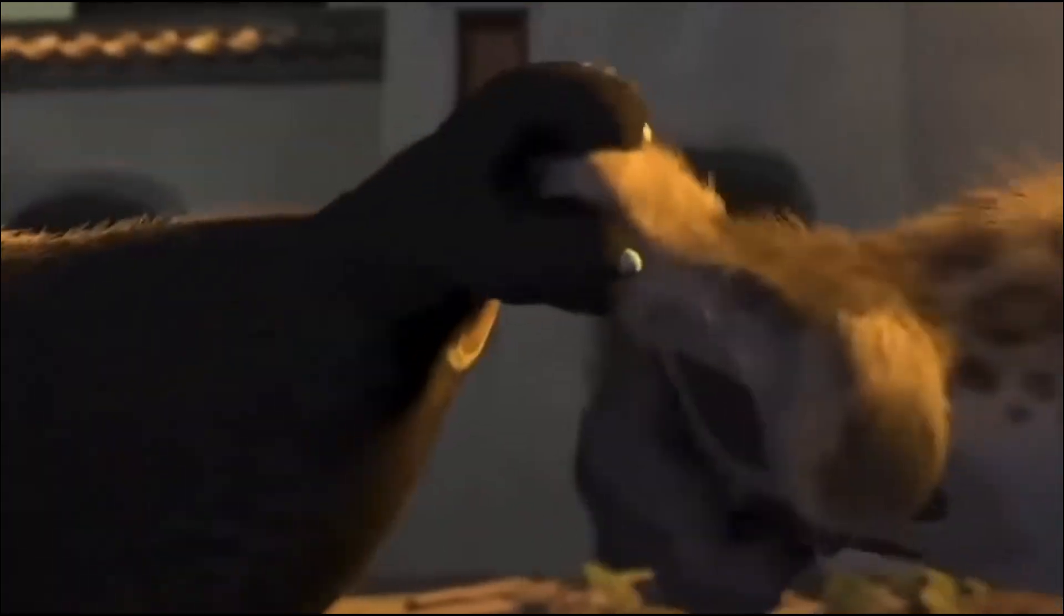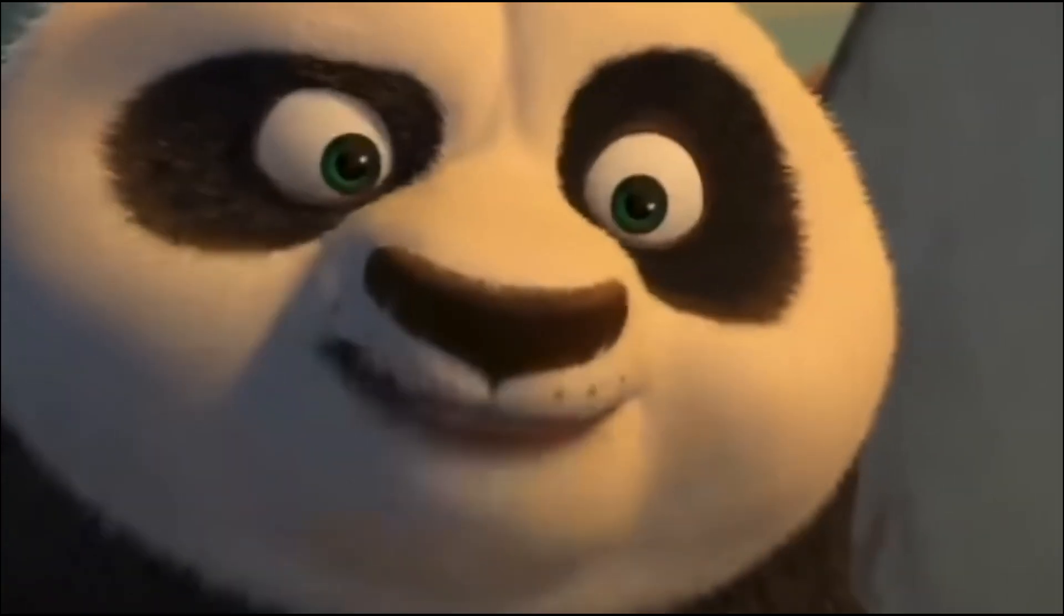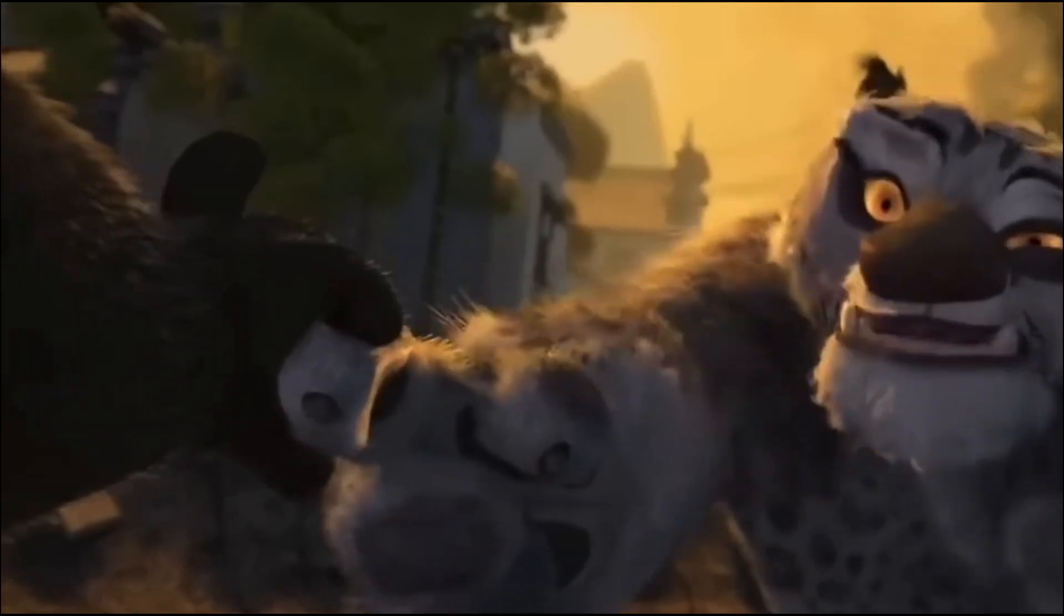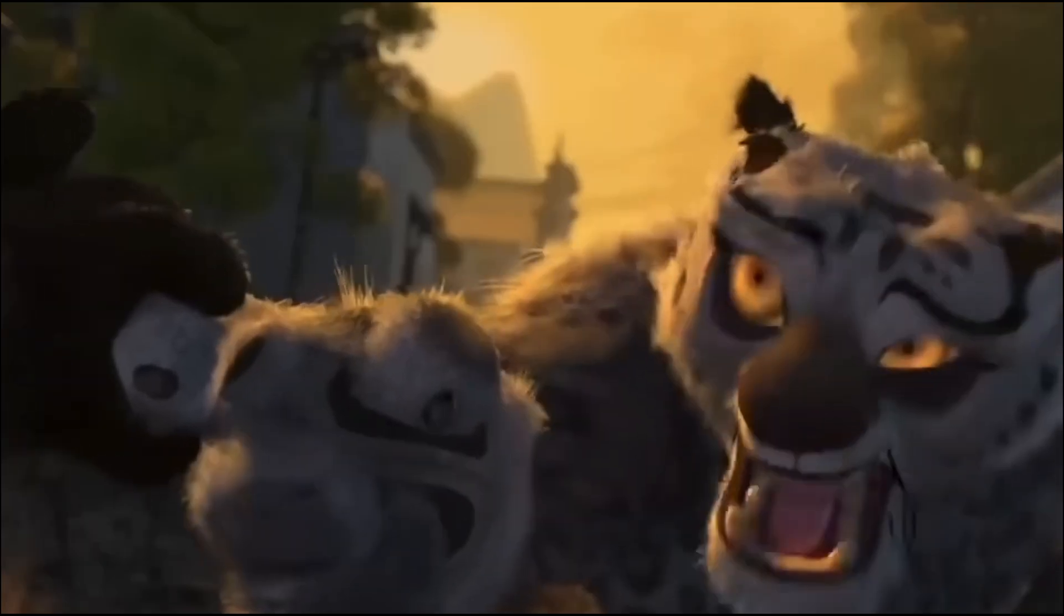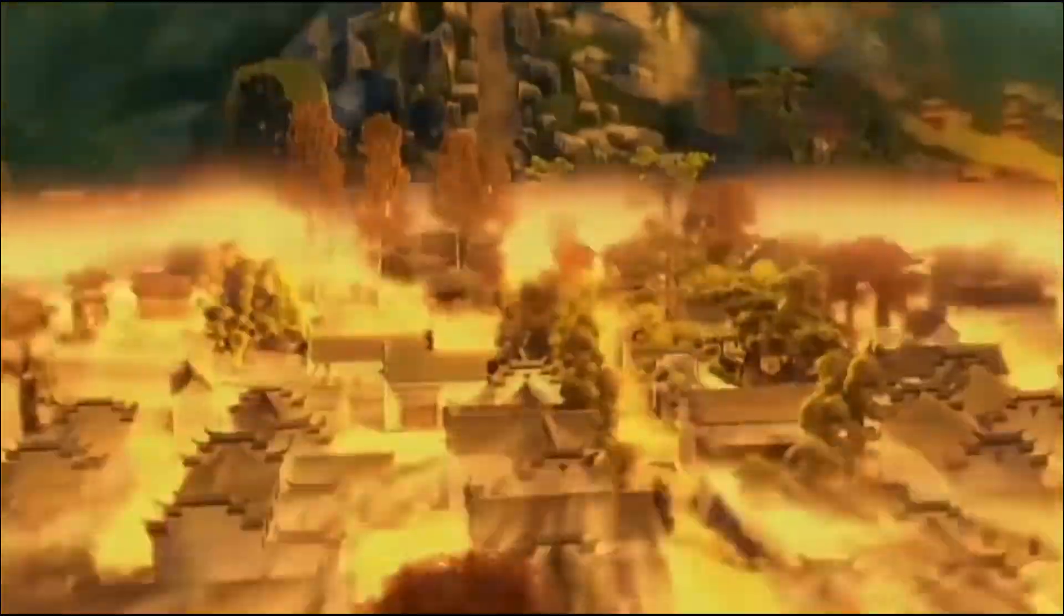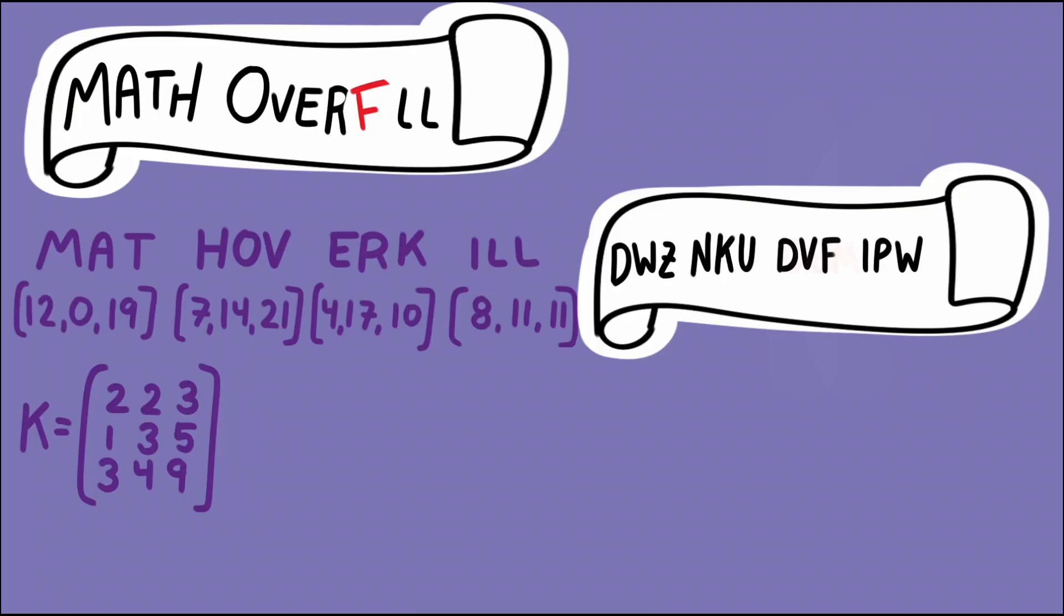Following this pattern with our next three blocks we get an encrypted message of dwz nku dvf ipw. Part of what makes this cipher so strong is how much diffusion is present in the encryption method. One small change in the plain text or original message results in a large change in the cipher text or encrypted message.